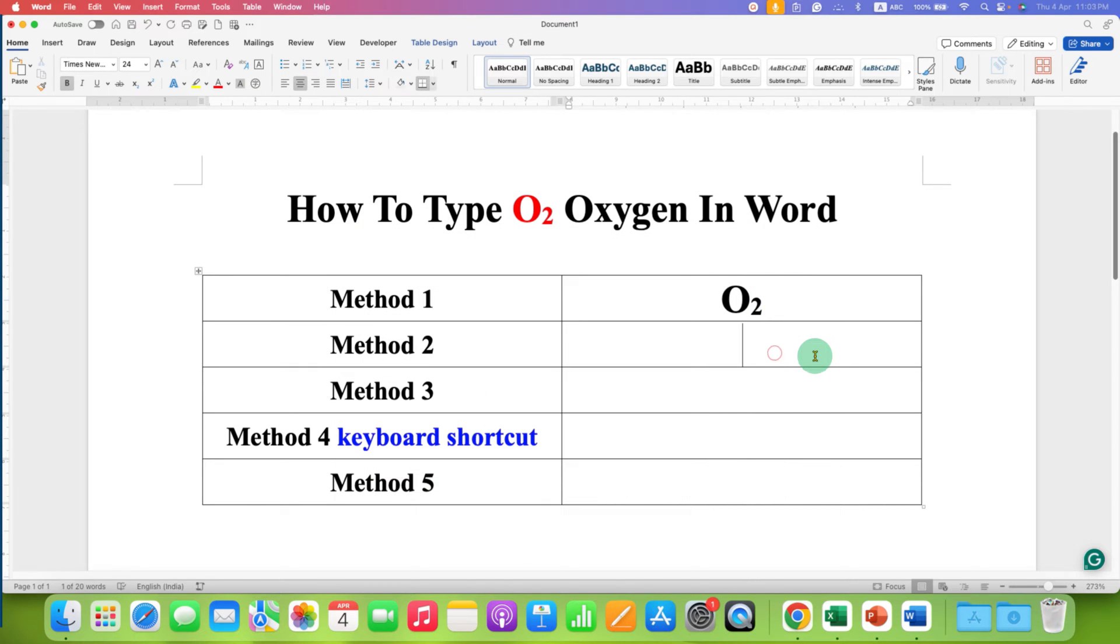The next method is also easy. After selecting the 2, under the Home tab, you will see the option of X at the bottom 2, which is the subscript option. Click on this option and you will get the O2 symbol.